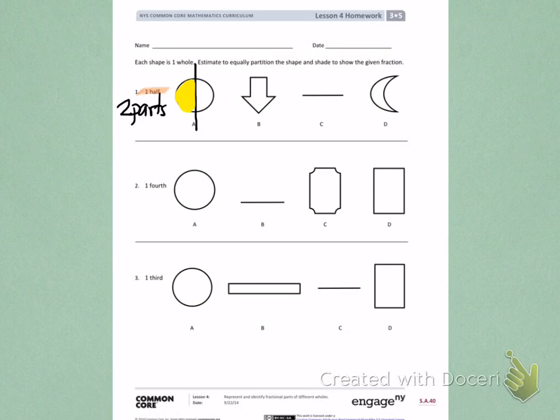Letter B shows an arrow. I need to imagine like this arrow is going to be cut into two equal parts. If I were to partition the arrow across, I would not get two equal parts. However, if I partition the arrow from the tip to the top, both sides would be like a mirror, and I would have two equal parts. Again, I need to shade to show one half.